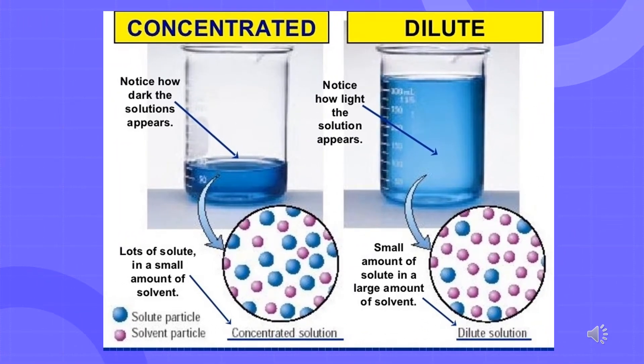The concentration of a solution is a measure of the amount of solute that has been dissolved in a given amount of solvent or solution. A concentrated solution is one that has a relatively large amount of dissolved solute, whereas a dilute solution is one that has a relatively small amount of dissolved solute.